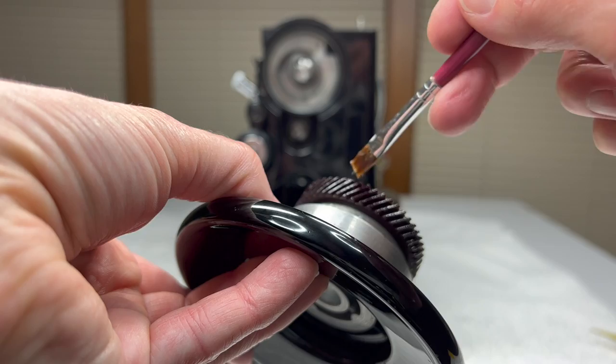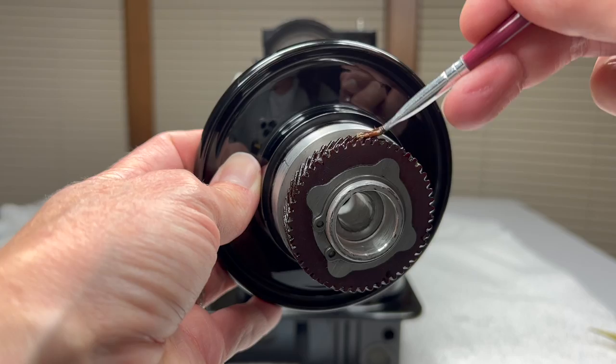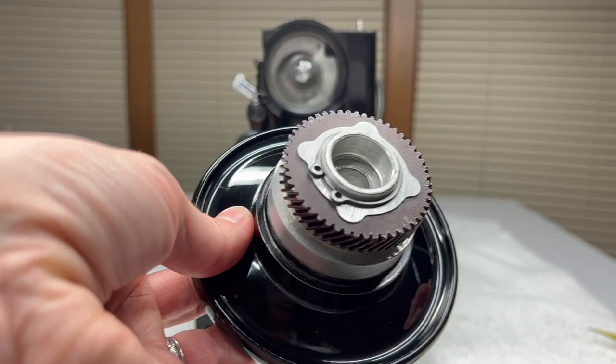I'm just making sure it's nice and distributed evenly inside all of the teeth. And I'm going to grease the worm gear on the top of the motor too. So between the two of them, this will have enough grease. Then when I'm done, set my brush aside.